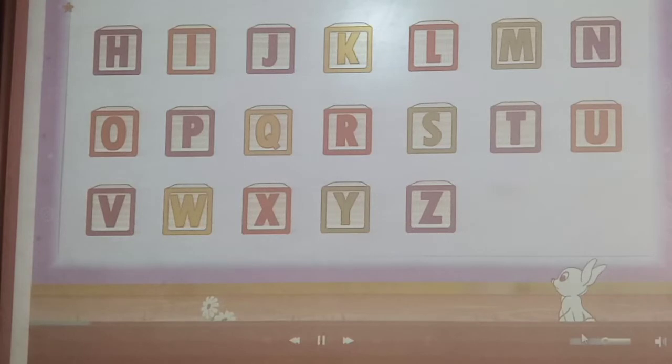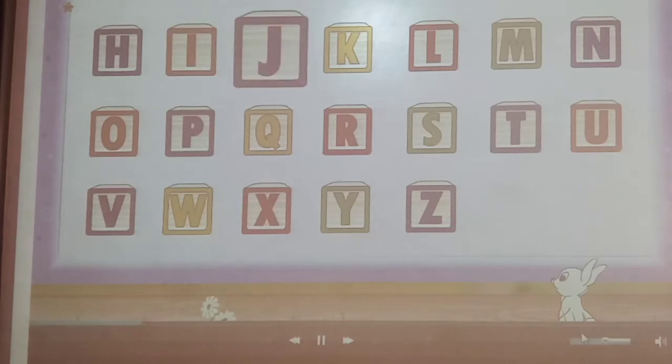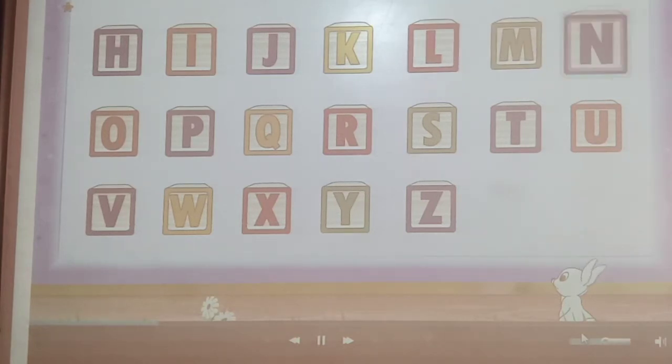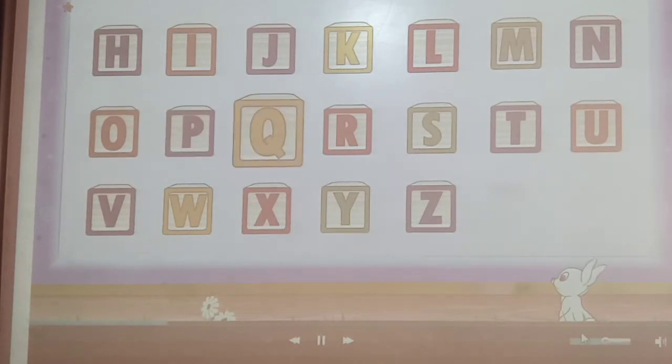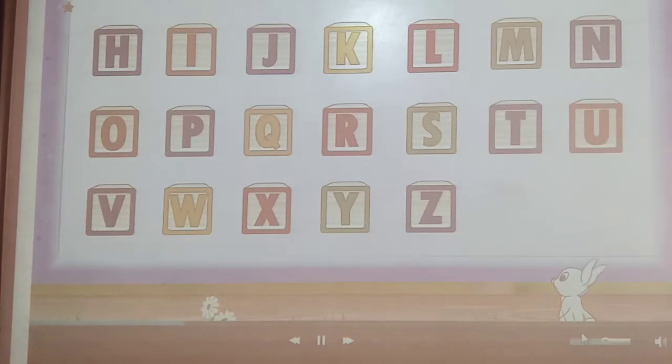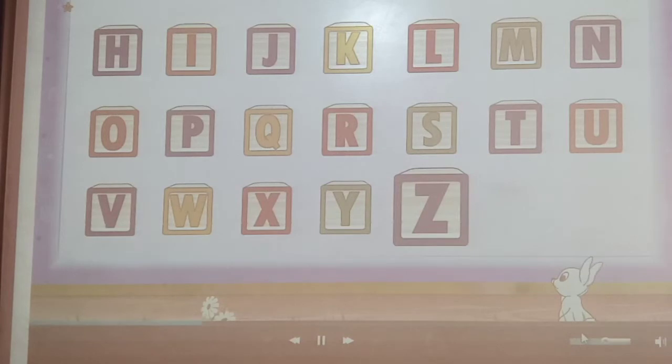The first letter is A. Next comes B. Then it is C. After C, we have D. Followed by E, F, G, H, I, J, K, L, M, N, O, P, Q, R, S, T, U, V, W, X, Y, Z. You remember all the alphabets and their order. Good.